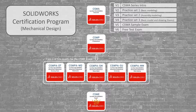SOLIDWORKS offers different certifications to give you the opportunity to document your skill level, and these certifications are strong documentation when you apply for a job where SOLIDWORKS skills are needed. It is really good for your CV to have these certifications. The level starts at the associate level — the CSWA — which tests the basics of SOLIDWORKS: sketching, 3D modeling, drawings, assemblies, and so on.